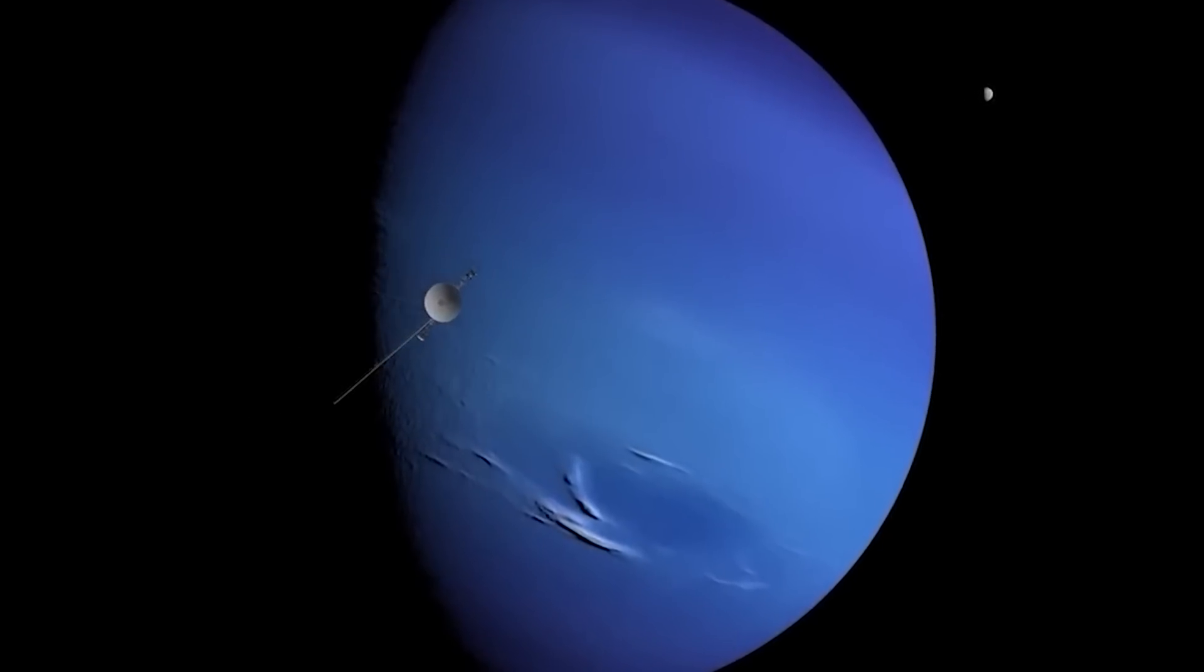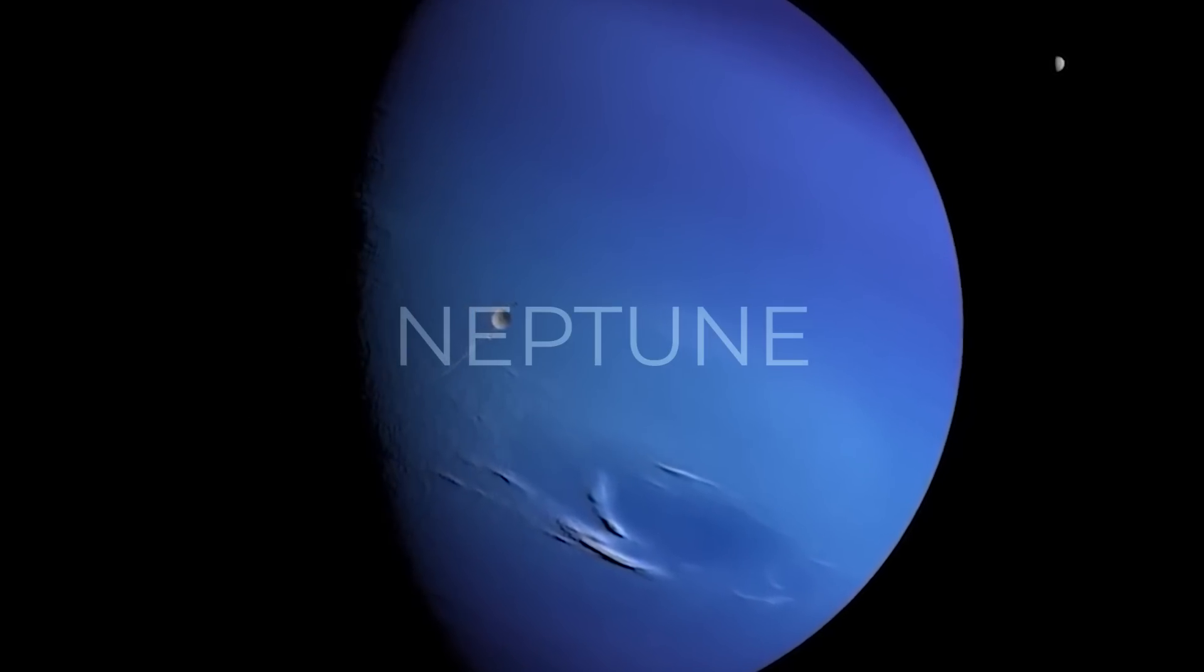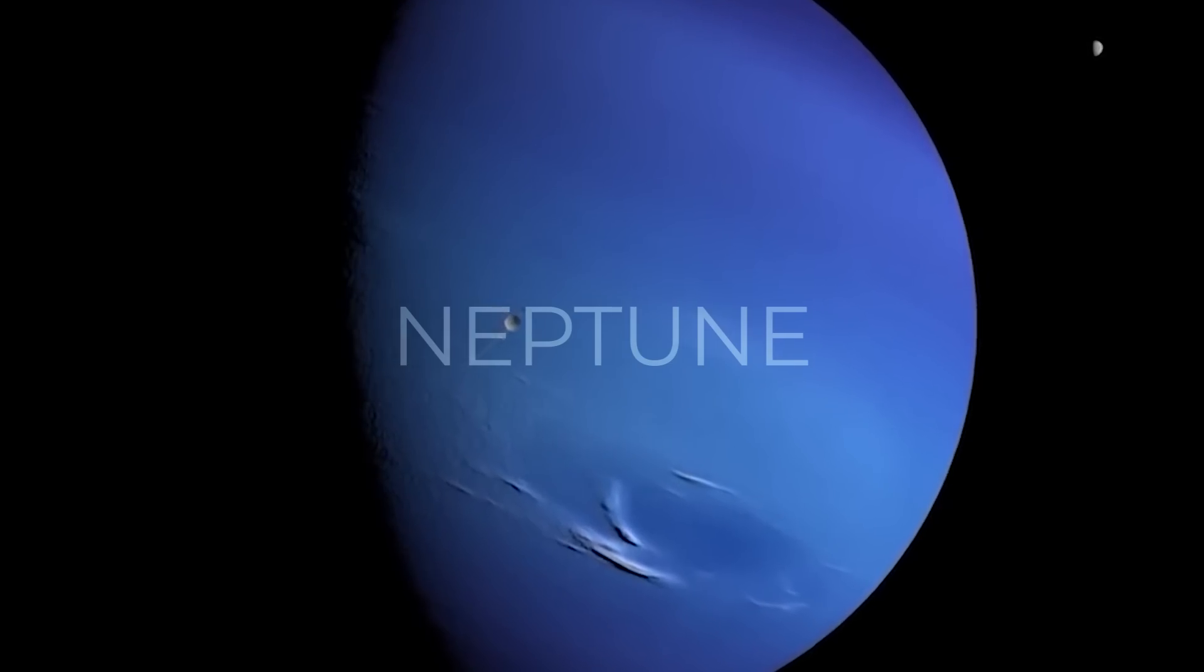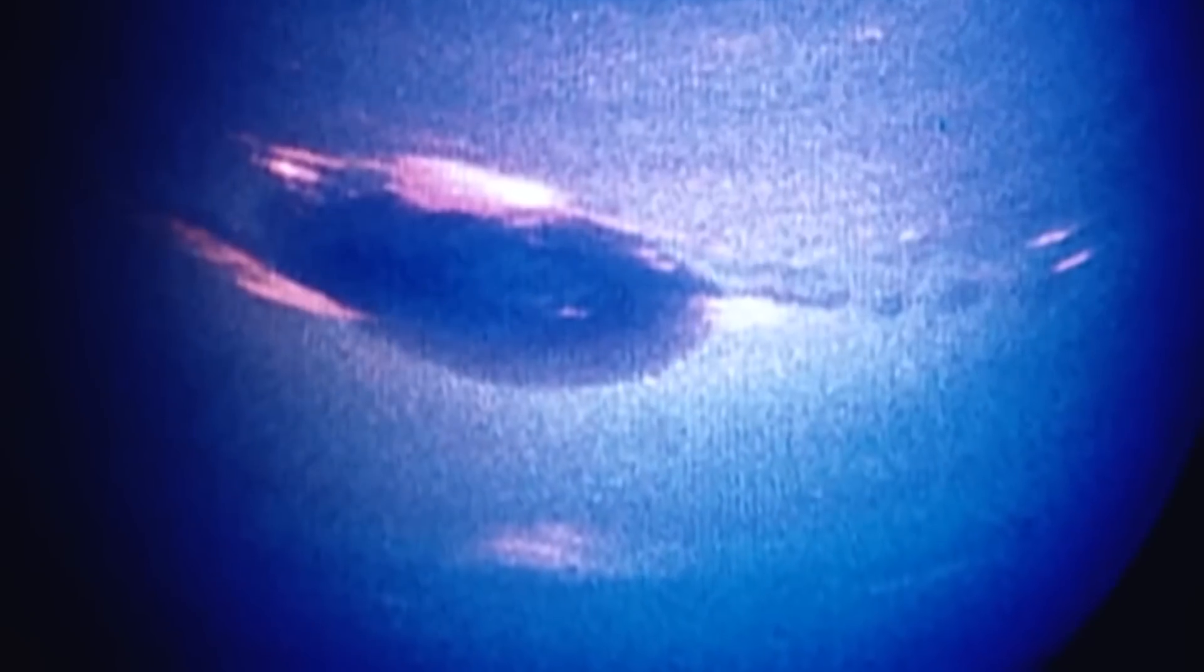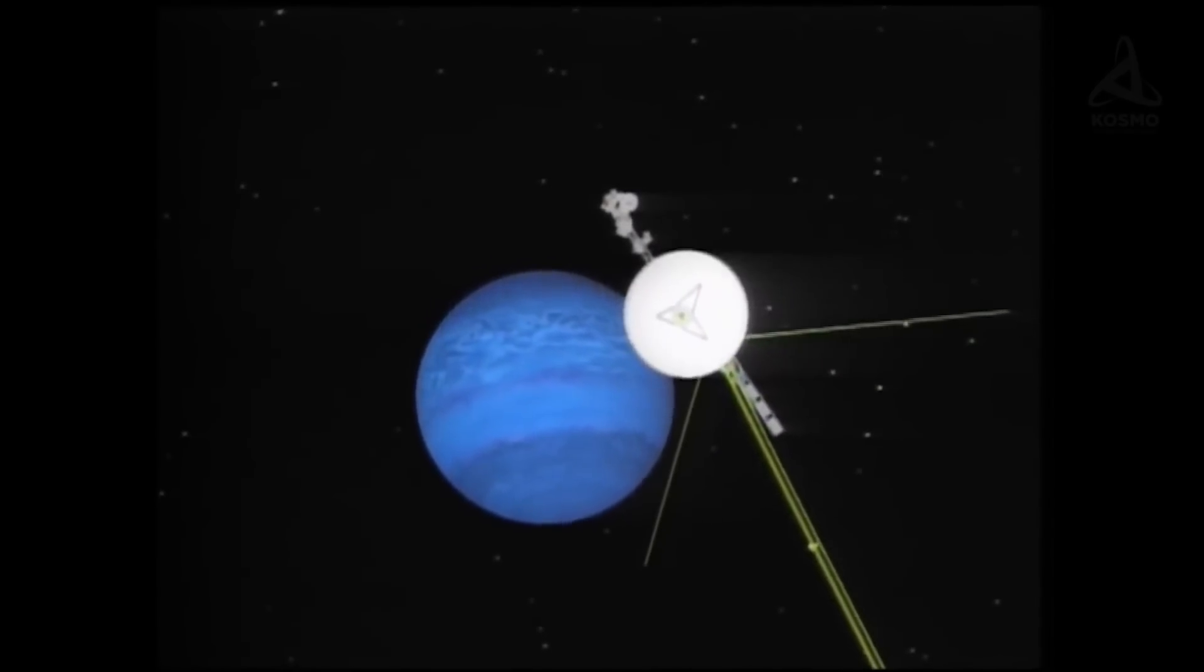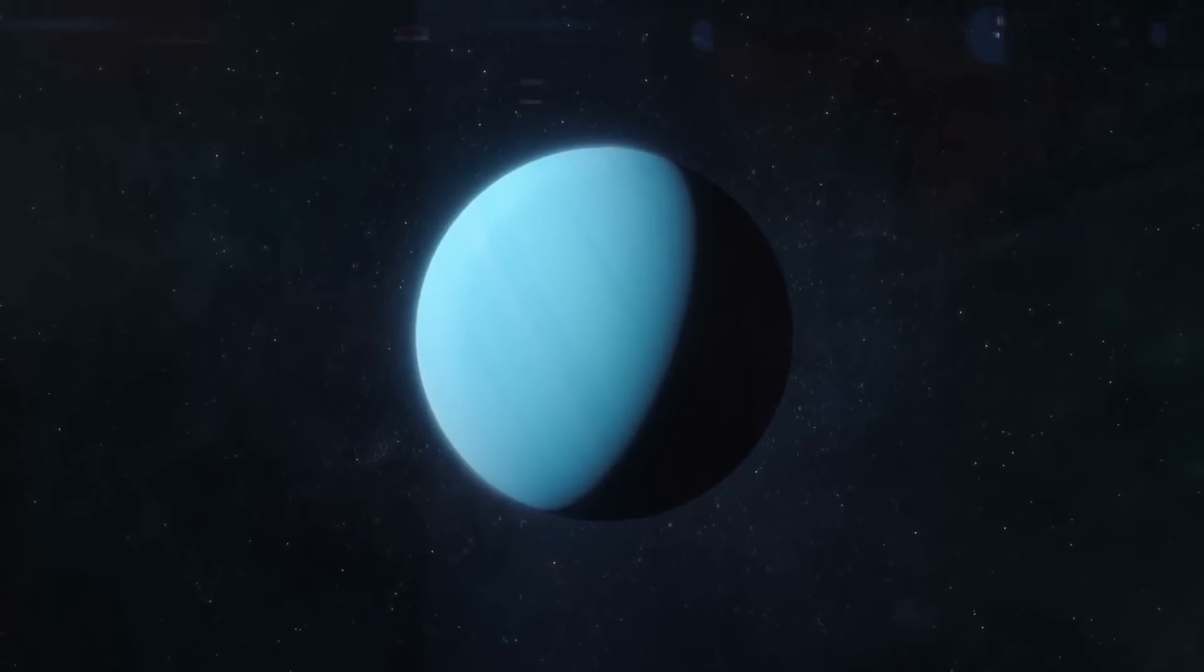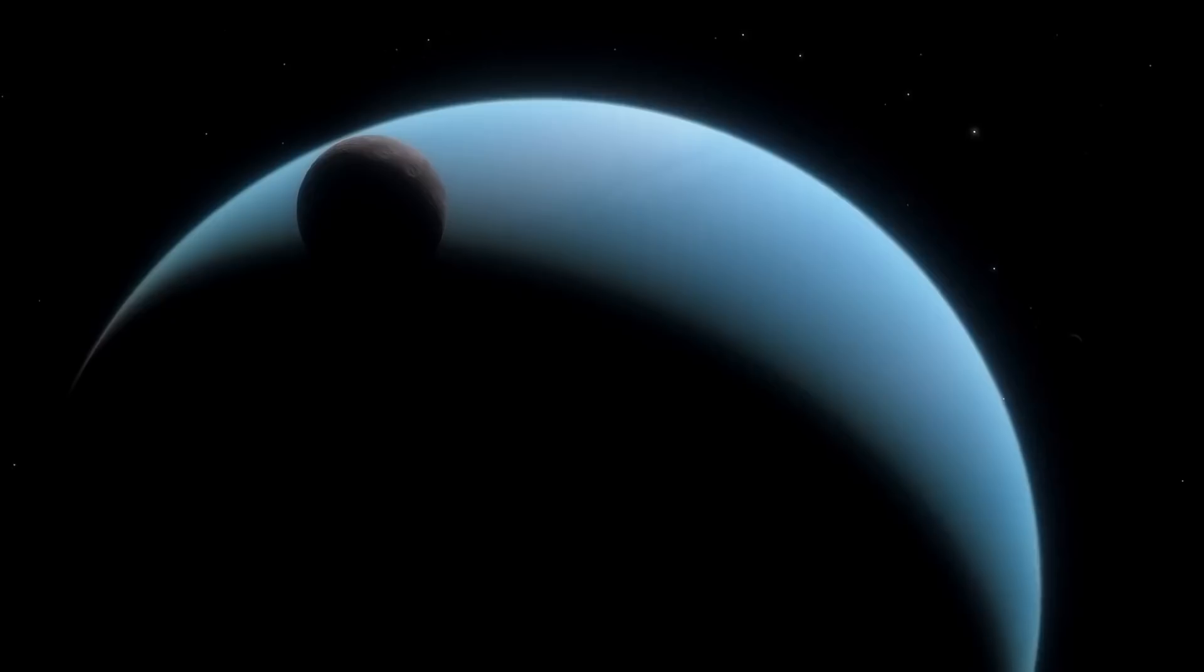In August 1989, Voyager 2 made it to Neptune, flying within just 3,000 miles of the planet's north pole. The flyby revealed the coolest planetary surface in the solar system, with temperatures reaching minus 400 degrees Fahrenheit.